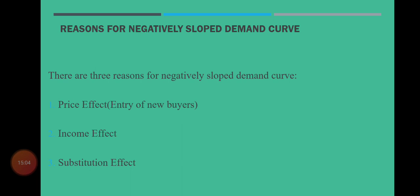قیمت کم ہو جانے کی وجہ سے consumer کی real income بڑھ جاتی ہے — یعنی اس کی آمدنی کی purchasing power بڑھ جاتی ہے۔ پہلے وہ 10,000 سے کم چیزیں خرید پاتا تھا لیکن قیمت کے کم ہو جانے کی وجہ سے زیادہ خرید سکتا ہے — اسے income effect کہتے ہیں۔ چنانچہ قیمت کے کم ہو جانے کی وجہ سے consumer کی real income بڑھ جاتی ہے اور demand کا negative slope ہوتا ہے۔